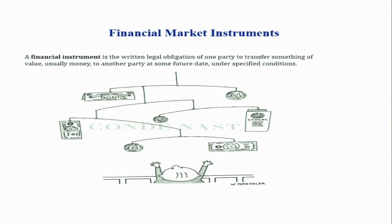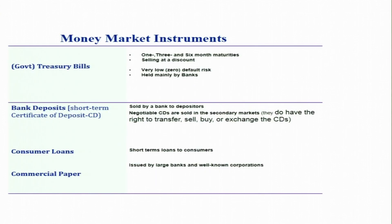Let us now discuss the second topic: types of financial instruments. A financial instrument is the written legal obligation of one party to transfer something of value — usually money — to another party at some future date under specified conditions. Examples of financial instruments include stocks, bonds, bank deposits, and insurance policies. We will discuss key financial market instruments under two headings: money market instruments and capital market instruments.